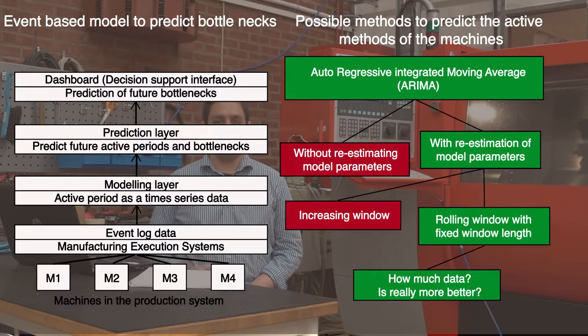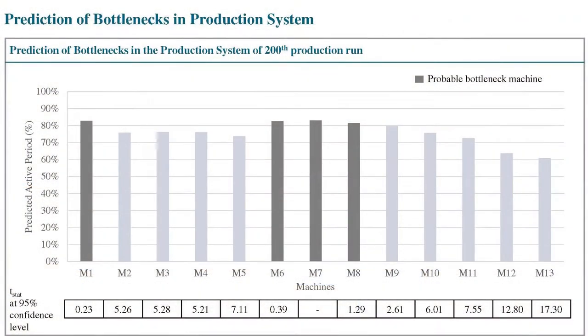This leads to the question of how much past data is required to predict the future active periods of the machine. The first result of this project is the determination of the optimal historical data window. We found that the past 100 production runs of data is a good predictor for the future active period across all machines in the production system. The bars on the graph represent the predicted active period of the machine using 100 past production runs.